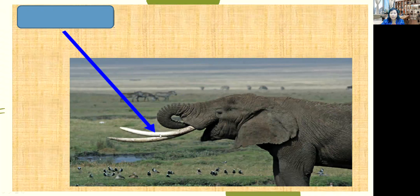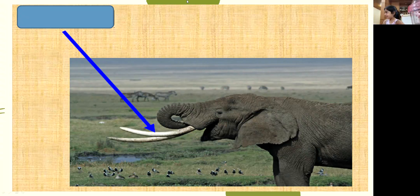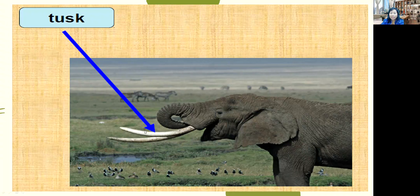And how about this? What is this part of an elephant? This one is the trunk. And this other part — students guessed mouth, then teeth. It is actually called a tusk. This is a tusk of an elephant. This is a tail — it is a tusk of an elephant. The tusk is made from ivory.